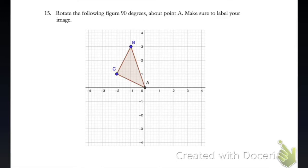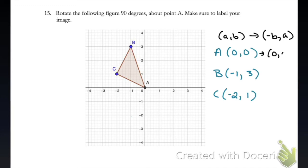Here on number 15, we are asked to rotate the following figure 90 degrees about point A, which is the origin (0,0), and says make sure to label your image. So since it doesn't give us a direction, we're going to assume that it's going to be counterclockwise, which is our normal way of rotating. So that means we're just going to go one quadrant this way. So since we're going 90 degrees, I'm going to start by writing out our coordinates. So A is at (0,0), the origin, B is at (0,3), and then C is at (-2,1). So remember our rules for rotating 90 degrees. That means we're going to take the coordinates, and then we switch them, and then switch the sign of the first coordinate. So in this case, since A is at (0,0), if I switch, it's still going to be at (0,0).